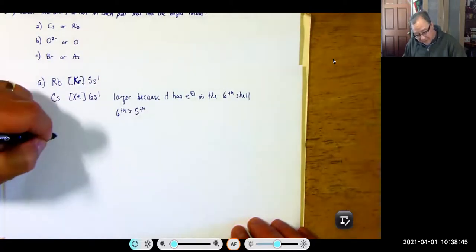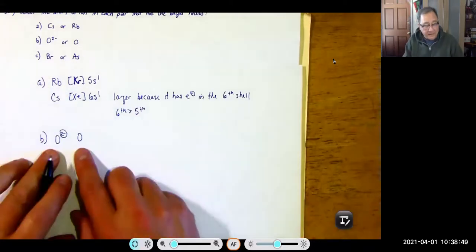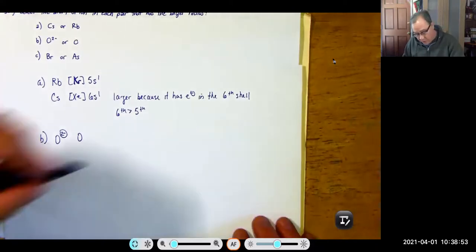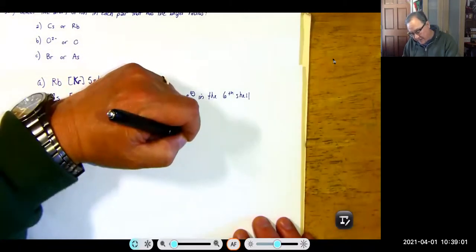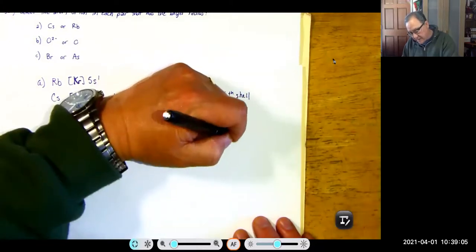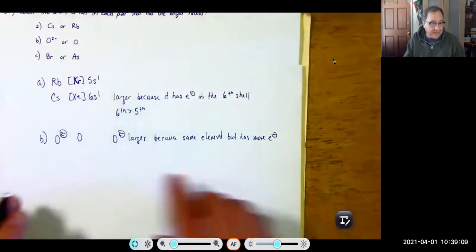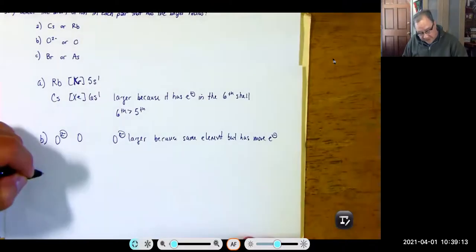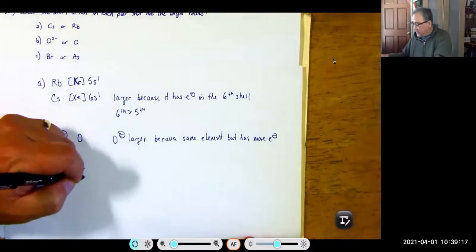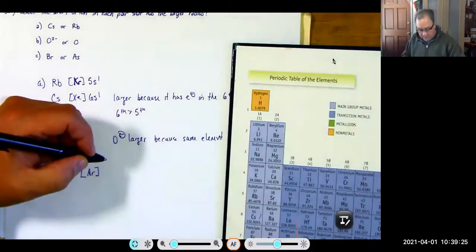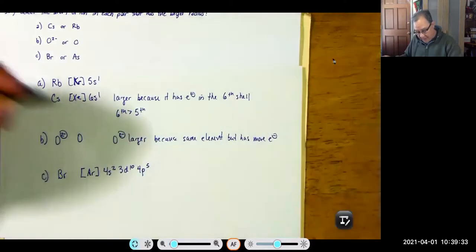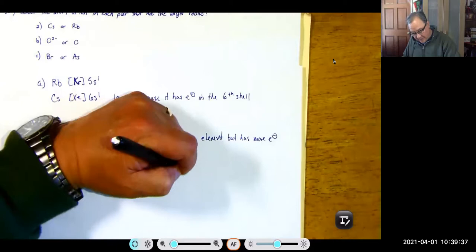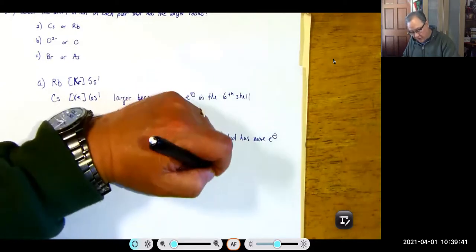Part B — O2 minus versus O: when comparing the same element, the one with more electrons is larger. O2 minus is larger because it has more electrons. For part C — bromine versus arsenic: bromine is [Ar] 3D10, 4S2, 4P5; arsenic is [Ar] 3D10, 4S2, 4P3. Both have outermost shell n=4.